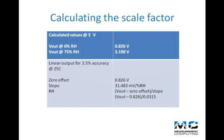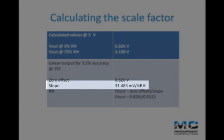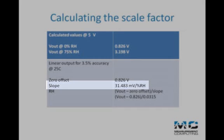First, we need to calculate the scale factor values for the HIH-4000. For M, we simply use the slope value of 31.483, which is provided in a spec sheet of the HIH-4000.